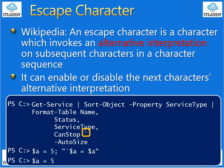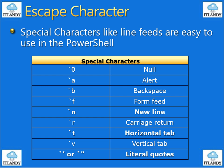Let me show you a few examples. Special characters like line feeds are easy to use in PowerShell: `0, `a, `b, `f, `n, `r, `t, `v — with double or single quotation marks — representing null, alert, backspace, and form feed. Windows PowerShell supports a set of special character sequences that are used to represent characters that are not part of the standard character set. These special characters in Windows PowerShell begin with the backtick character, also known as the grave accent.